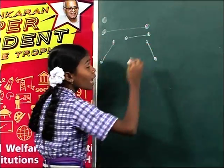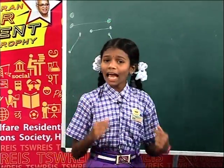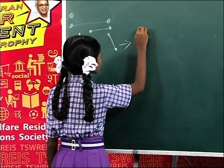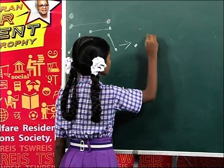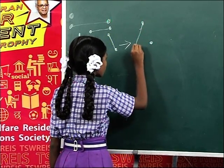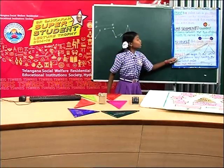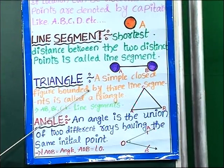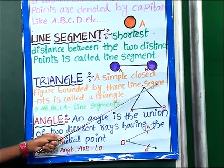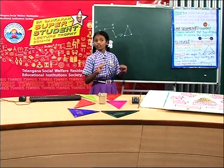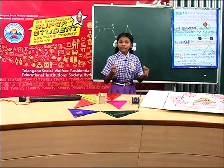Friends, can we prepare any closed figure with three line segments? Yes, we can prepare a triangle with three line segments. A triangle is a simple closed figure bounded by three line segments.